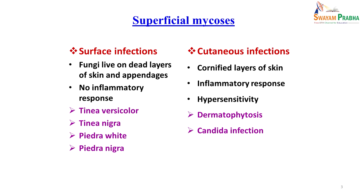There is a basic difference between surface and cutaneous infections. Surface infections are caused by fungi living on dead layers of the skin, so there is no inflammatory response, as they do not come in contact with the body's inflammatory cells. In contrast, cutaneous infections involve fungi in the cornified layers of skin, bringing them into contact with the inflammatory response and producing hypersensitivity. Surface infections comprise mainly tinea versicolor, tinea nigra, white piedra, and black piedra, while cutaneous infections are mainly dermatophytosis and candida infection.